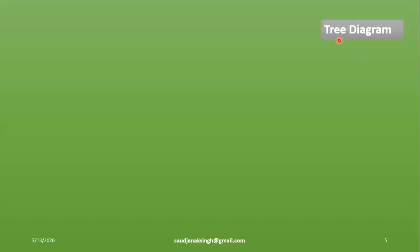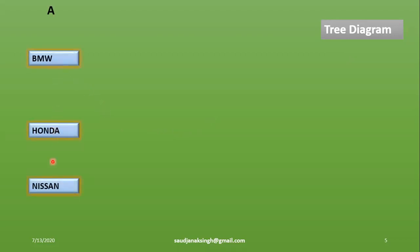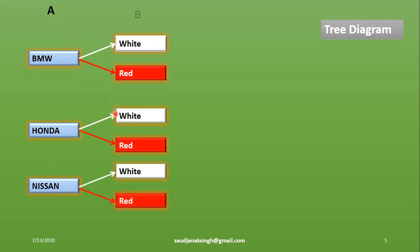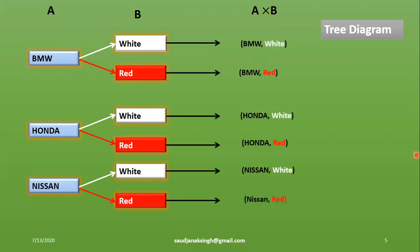The Cartesian product can also be defined using a tree diagram. The first set A contains BMW, Honda, and Nissan. From BMW, two branches lead to white and red, since set B has two elements. Similarly, Honda branches to white and red, and Nissan branches to white and red. This gives all ordered pairs of A cross B. This representation is called the tree diagram.